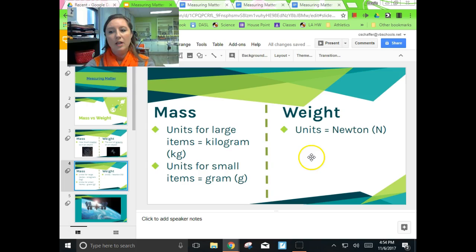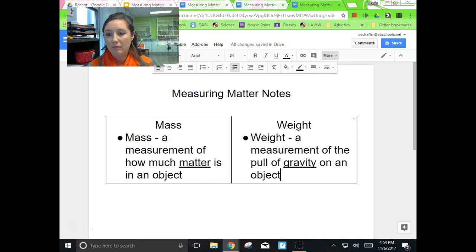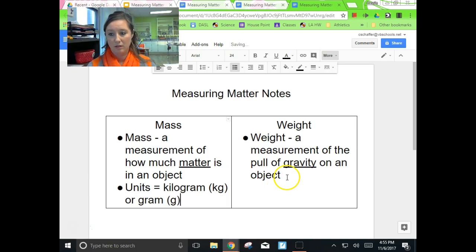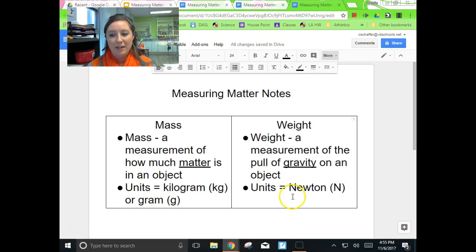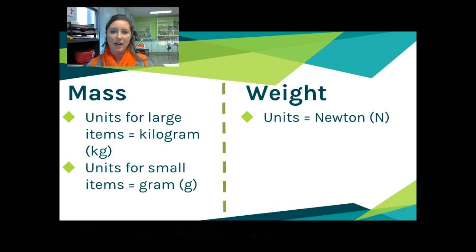The units for weight are going to be called the Newton, after Sir Isaac Newton. He was really the one who started leading the discussion on gravity, so it makes sense to give him recognition since weight measures gravity. Notice that kilogram and gram are lowercase, but Newton is capitalized — because it's named after a person. So in our notes: units for mass equal kilogram (kg) or gram (g); units for weight equal Newton.